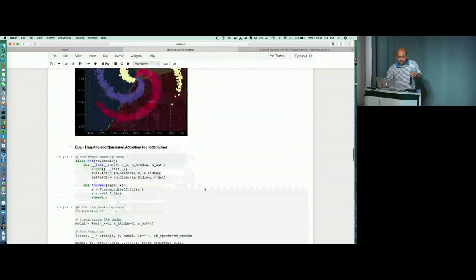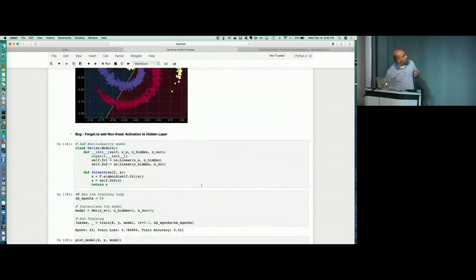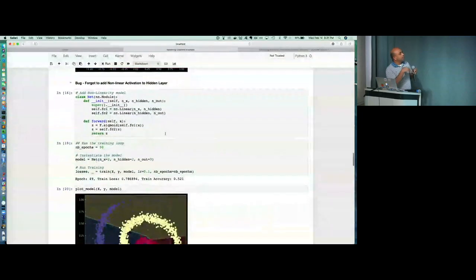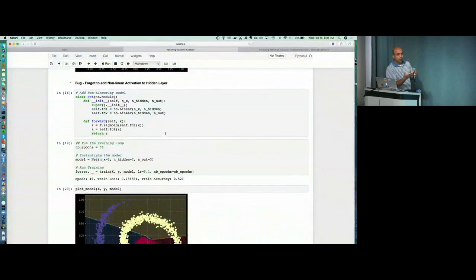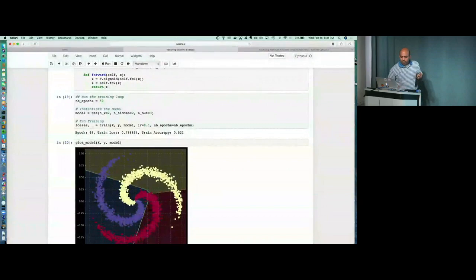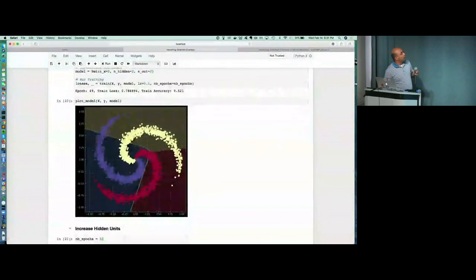And then I found out that actually I have a bug in my code. I forgot to add the nonlinear activation to my hidden layer. So if you add linear model upon linear model, it's still a single long linear model. So I added this sigmoid function. So this is, again, things you can easily find out when you do plots. Then I reran the model with the sigmoid activation. And it still didn't perform as well.